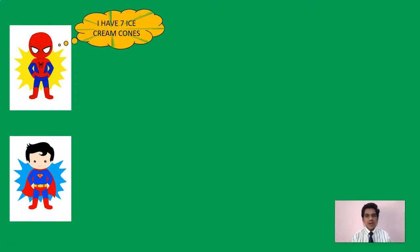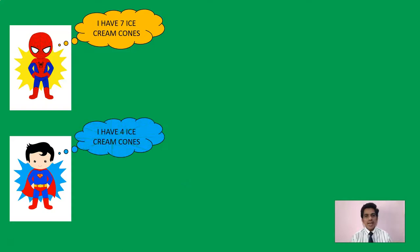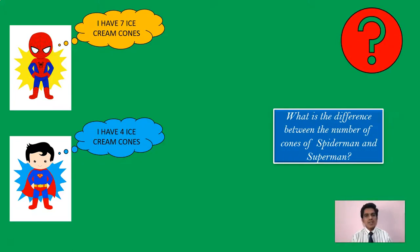Now, look at these two pictures. Here I have a very young Spider-Man and a very young Superman. This is what Spider-Man says: I have seven ice cream cones, and this Superman has four ice cream cones. Here the question is: what is the difference between the number of cones of Spider-Man and Superman?